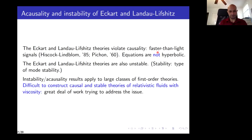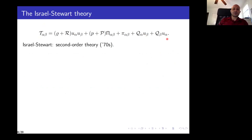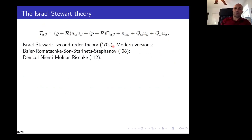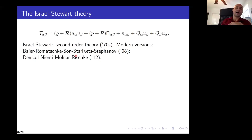Let's now talk about the Israel-Stewart theory. This is a second-order theory introduced in the 1970s by Israel and Stewart, essentially following some work on classical fluids by Müller. What people mean by Israel-Stewart nowadays are the modern versions derived by different groups of authors. Strictly speaking all these theories are slightly different in their equations of motion, but they share the same basic philosophy, so we usually refer collectively to all of them as Israel-Stewart theories.